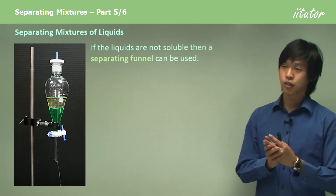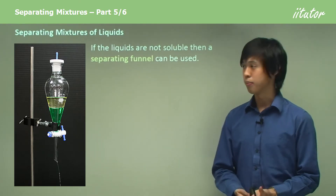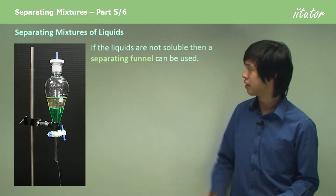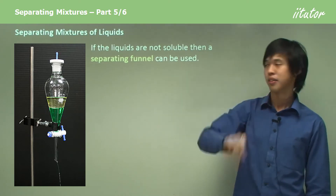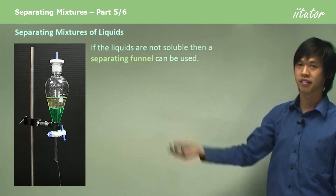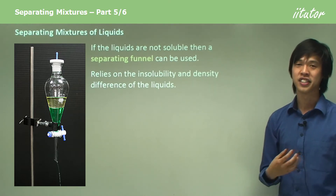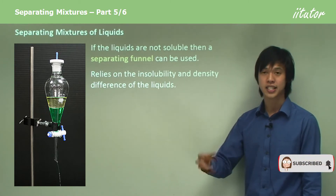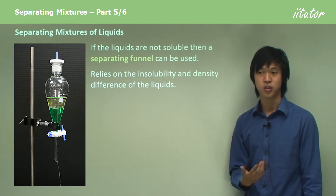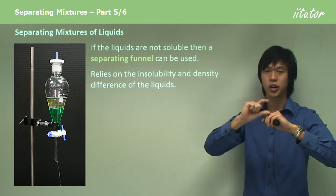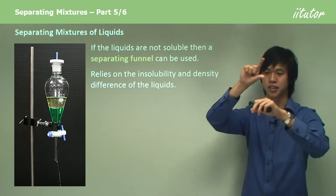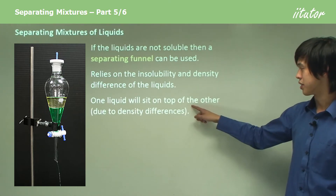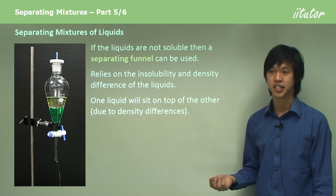That was for two liquids that can dissolve in one another. But what about two liquids that can't dissolve in one another, like oil and water? The top is oil because oil sits on top of water, and the bottom is water. We can use what's called a separating funnel. This relies on the two liquids being insoluble in each other and one being less dense than the other. Water is more dense than oil so it sits on the bottom.